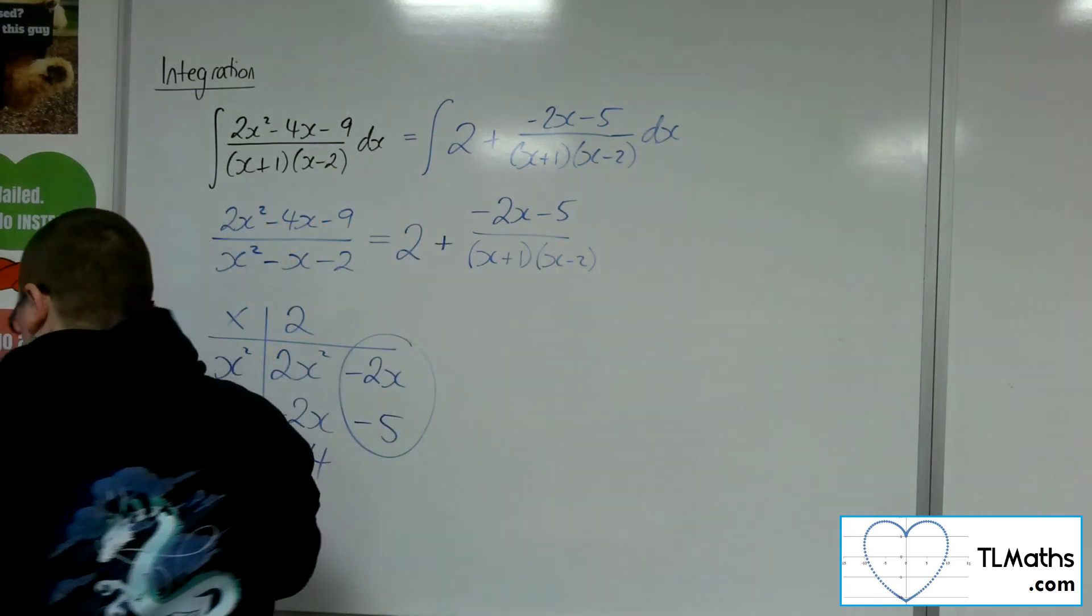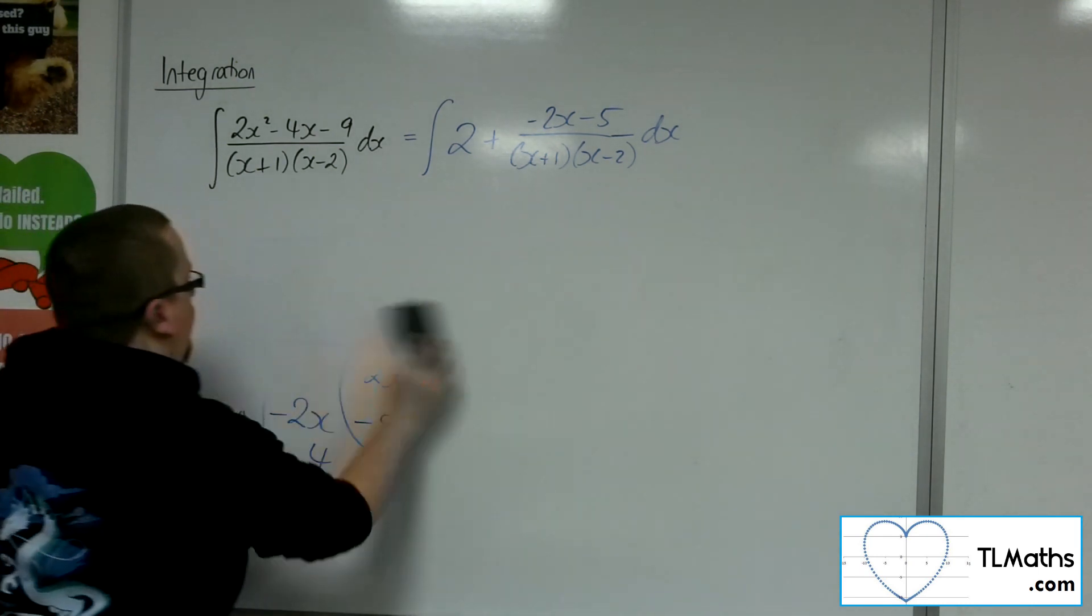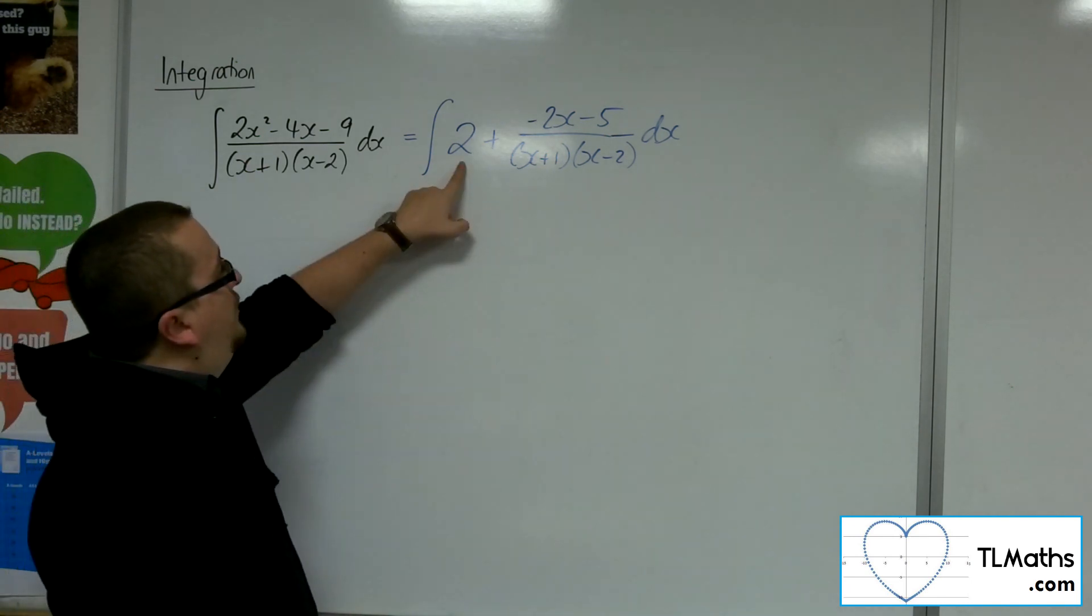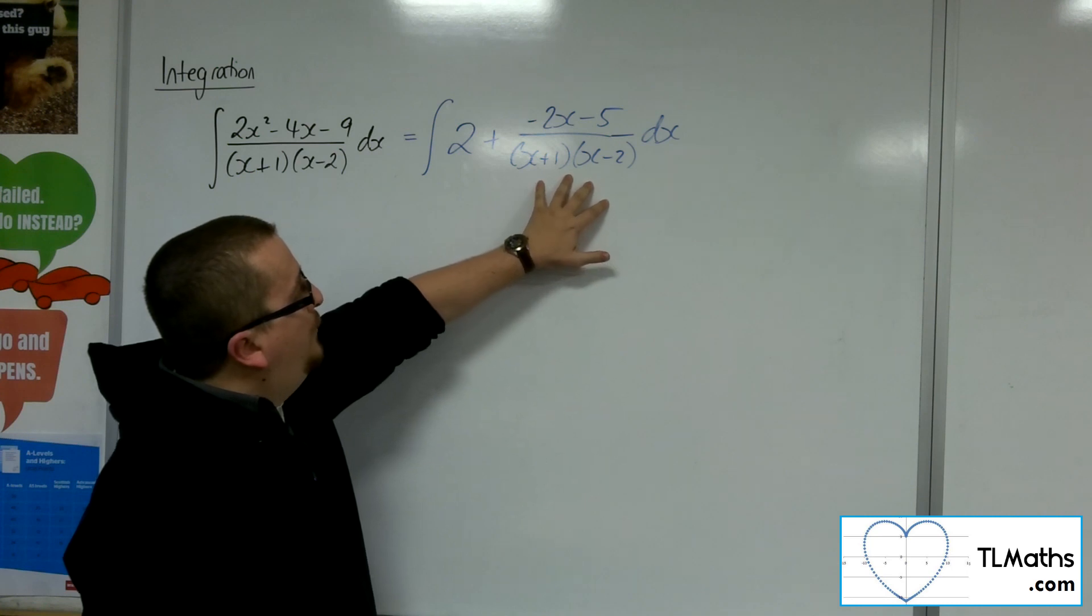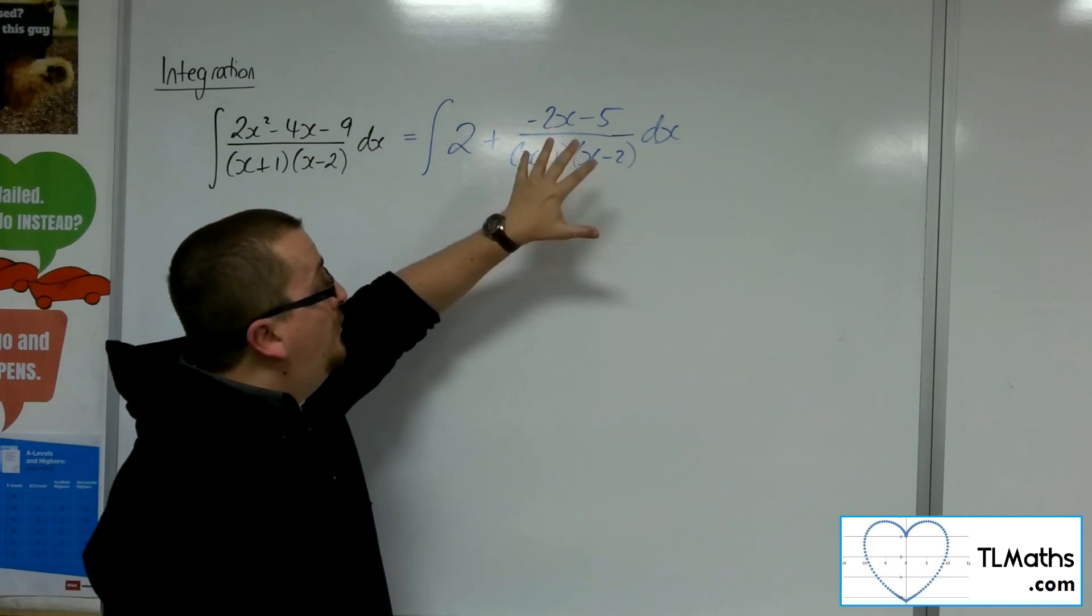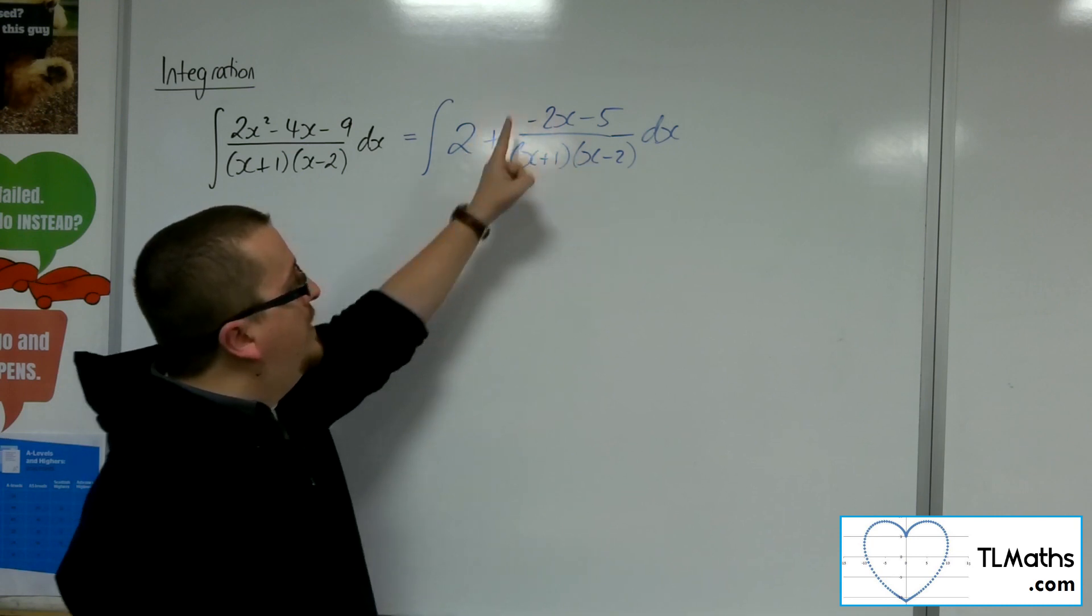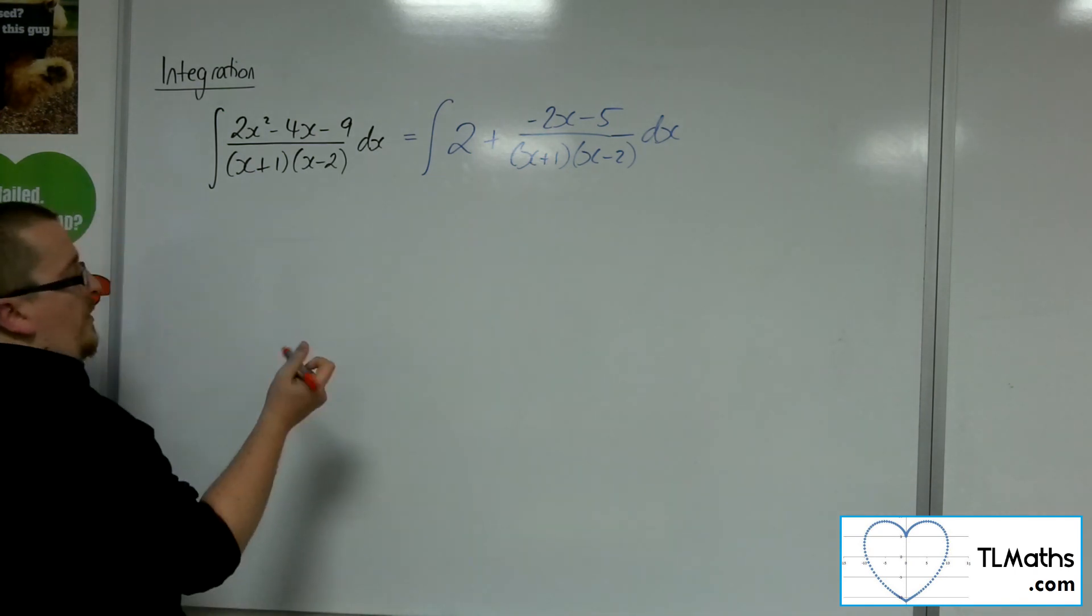So we've got that far through. So what I've reduced this problem to is integrating 2. Well, that's easy. But I now need to integrate this minus 2x minus 5 over x plus 1x minus 2. And in order to do that, I've got to split that into partial fractions, which I can now do because it's no longer an improper fraction. So let's get on with that.